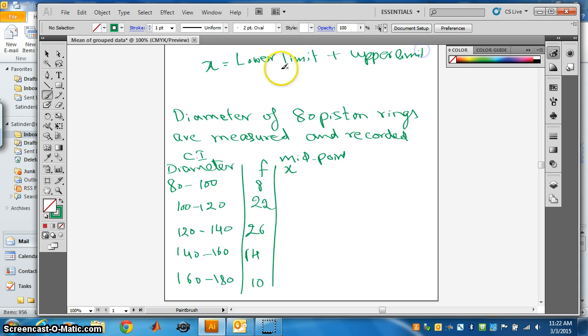80 plus 100 divided by 2 is 90. Similarly, 100 plus 120 divided by 2 is 110.